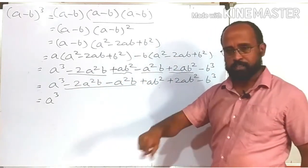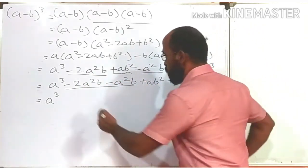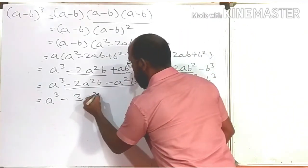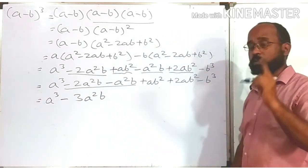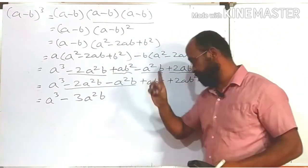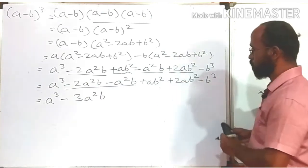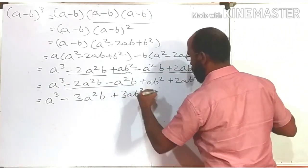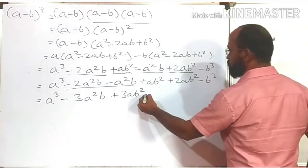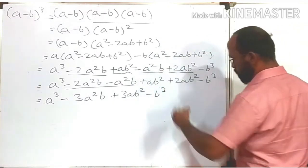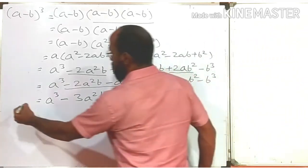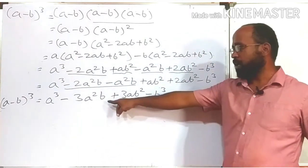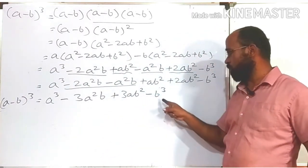Combining the like terms: -2a²b and -a²b have the same symbol, so we add their coefficients: 2 + 1 = 3, and the symbol is minus, giving -3a²b. Similarly, ab² + 2ab² gives +3ab². And -b³ remains as it is. So the final result is: a³ - 3a²b + 3ab² - b³. This is the formula we have derived for (a - b)³.